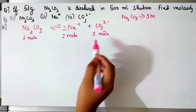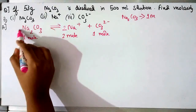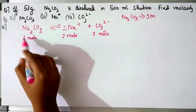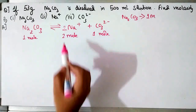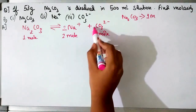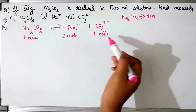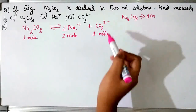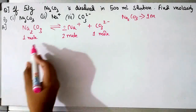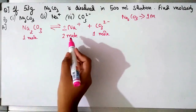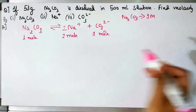There is no coefficient in front of Na₂CO₃, so it is 1 mole. There is a 2 in front of Na⁺, so there are 2 moles of Na⁺. CO₃²⁻ has no coefficient, meaning 1 mole. So when 1 mole of Na₂CO₃ is dissolved in water, it gives 2 moles of Na⁺ and 1 mole of CO₃²⁻.